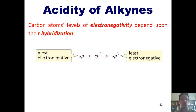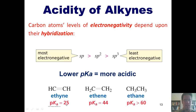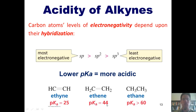Recall from Chapter 1: pKa values are numbers used to reflect a compound's acidity, and the lower the pKa value of an acidic proton, the more acidic that proton is. Alkynes have pKa values of about 25, meaning the protons bonded to the SP hybridized carbons are somewhat acidic. By comparison, protons bonded to SP2 hybridized carbons in an alkene have pKa values of 44, and protons bonded to SP3 hybridized carbons in alkanes have pKa values above 60.